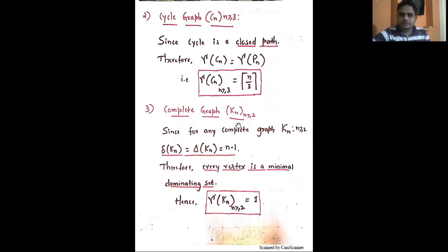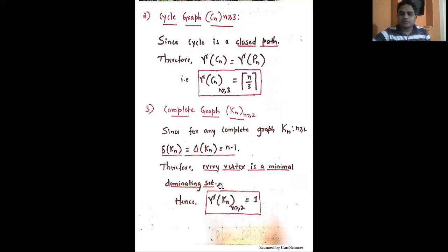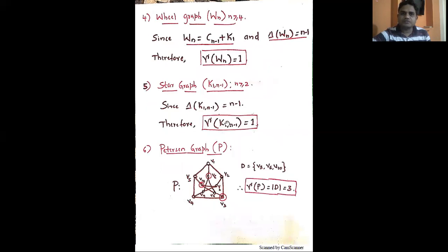Next is the complete graph K_n. For any complete graph K_n, the minimum degree and maximum degree are both n minus 1. Every vertex is adjacent to all other vertices, and every single vertex forms a minimal dominating set. Therefore, the domination number of K_n is 1.